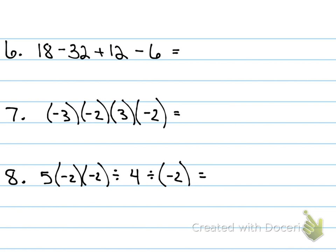I want you to do these three. Number six, what's the first thing you want to do? You want to rearrange them, right? Group your negatives and your positives together. 18 plus 12 is 30, minus 38 is negative 8. We got that right.